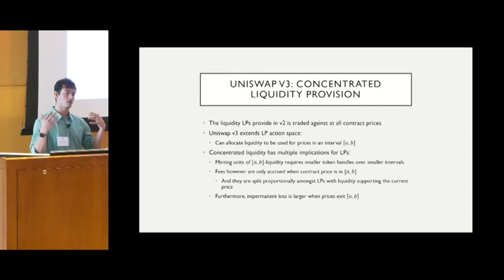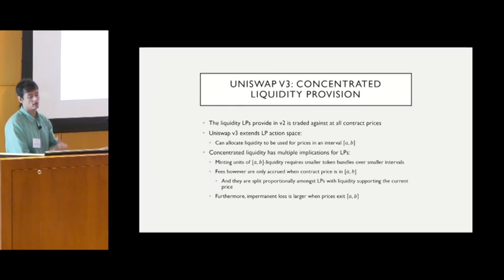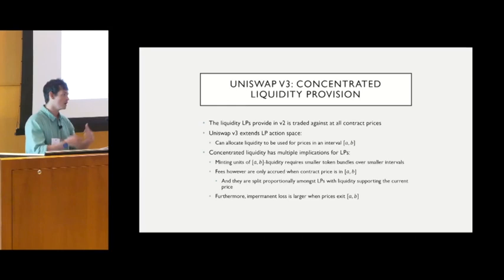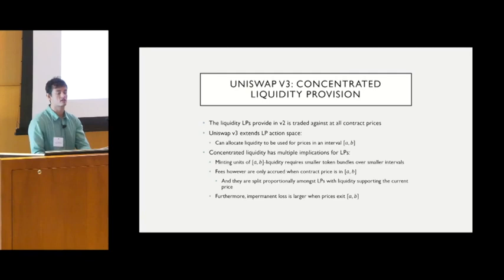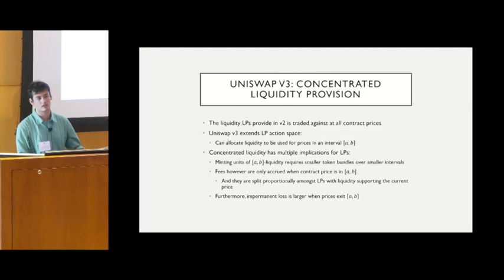Now for V3: the extension from V2 is that liquidity providers can allocate their liquidity to be used at prices in specific intervals. The contract has specific buckets for which liquidity providers can purchase liquidity in each one. Allocating liquidity to a concentrated bucket requires less capital than doing so for a larger bucket. Fees are accrued when prices remain in that bucket, but if prices exit the bucket, fees are no longer accrued and losses can be larger.